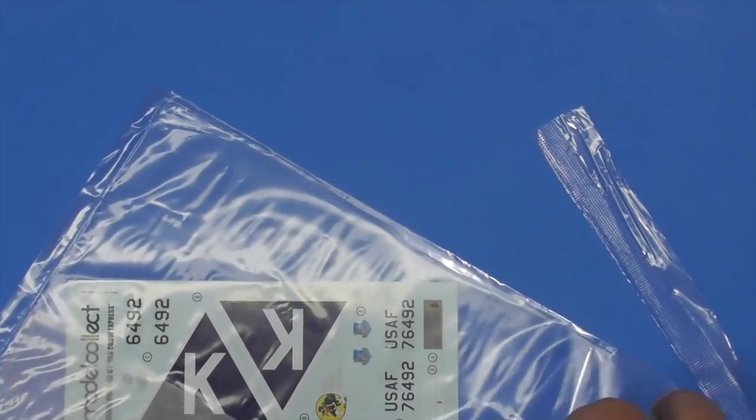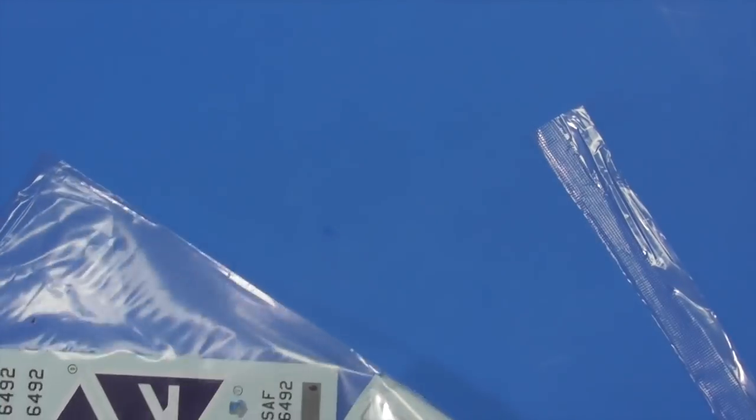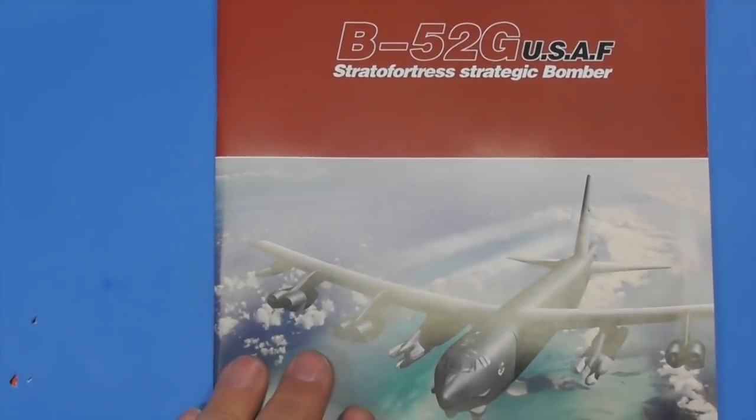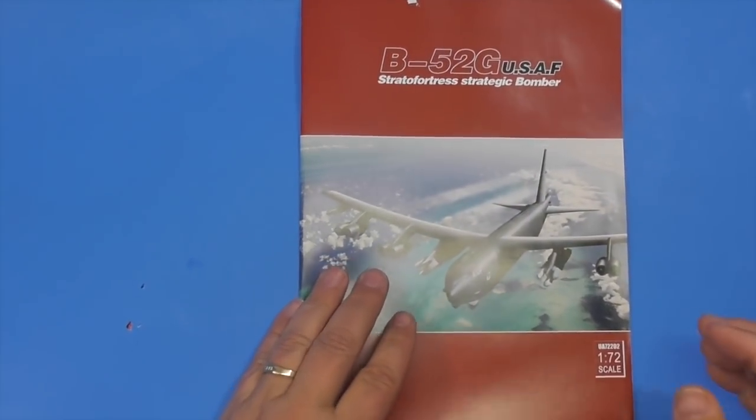The Revell one, as far as I know, you can still pick up online anywhere from fifty to seventy-five dollars. This is going to cost you a hundred and twenty or so depending on where you get it. The Monogram one does not have the level of detail this one does, but like I said it's still a good kit.